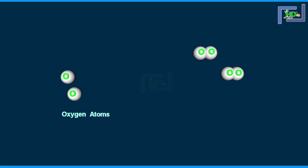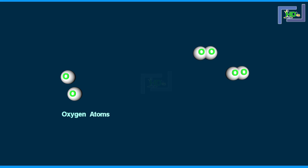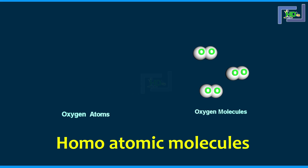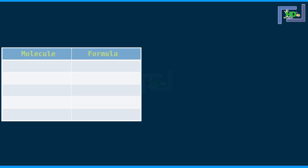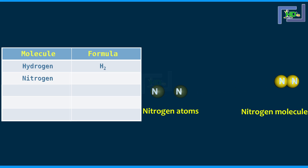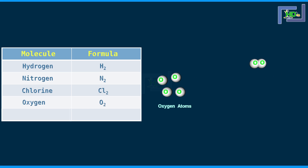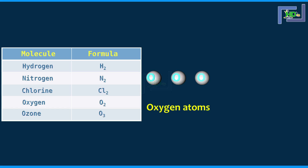Molecules can be made up of atoms of the same element or atoms of different elements. When molecules are made up of atoms of the same element, they are called homoatomic molecules. Examples: two hydrogen atoms combine to form hydrogen molecule H2. Two nitrogen atoms combine to form nitrogen molecule N2. Chlorine is Cl2. Two oxygen atoms combine to form O2. Three oxygen atoms combine to form ozone, O3.